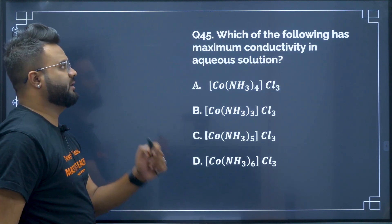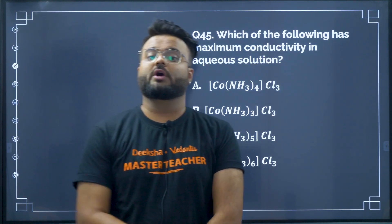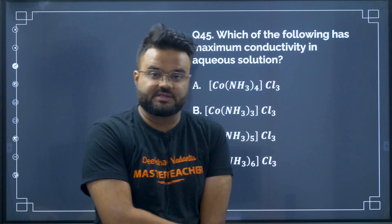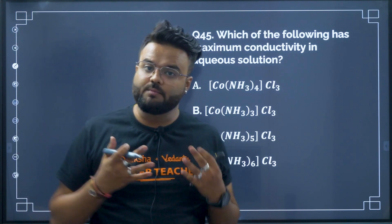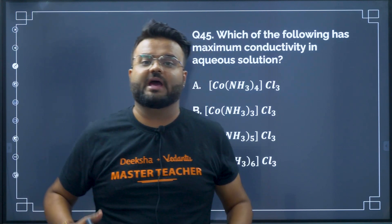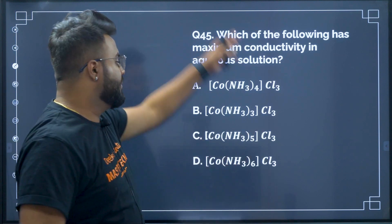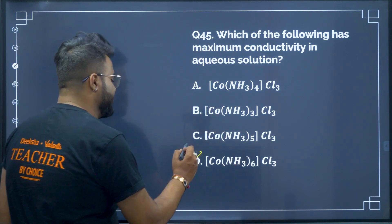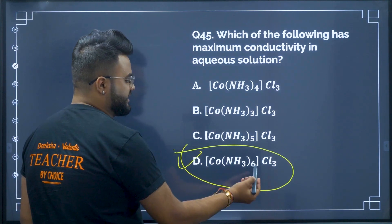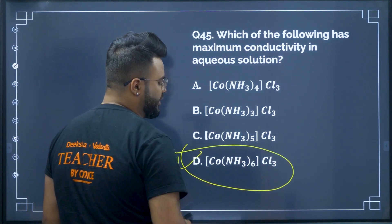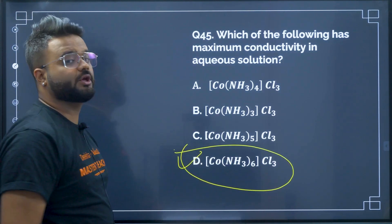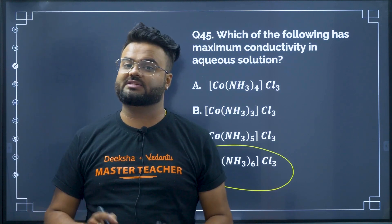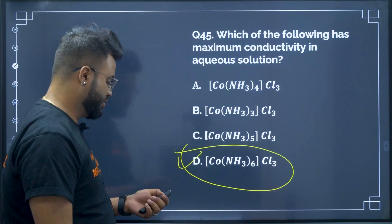Question number 45: which of the following has maximum conductivity in aqueous solution? The one with the maximum coordination number will have maximum conductivity. Among these, option D — hexamminecobalt(III) chloride — has the maximum coordination number. Therefore option D will be your correct answer. Please keep these tips in mind as they are going to help you for sure.